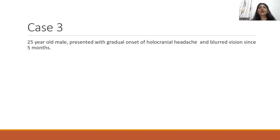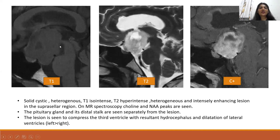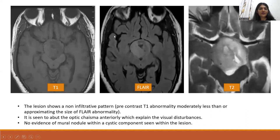Case 3 is a 25-year-old male presenting with gradual onset of monocular headache and blurred vision since 5 months. On T1 sagittal images, there is a heterogeneous solid-cystic T1 iso-intense mass, hyper-intense on T2 with cystic areas, showing intense enhancement on contrast. On MR spectroscopy, it showed choline and NAA peaks. The pituitary gland and the distal stalk are seen separately from the lesion. It compresses the lateral ventricle resulting in hydrocephalus. On T1 and FLAIR images, the size of the lesion is approximately the same, showing a non-infiltrative pattern. There is abutment of the chiasm anteriorly, but no nodule-in-cyst sign is seen.